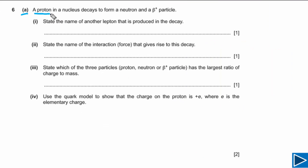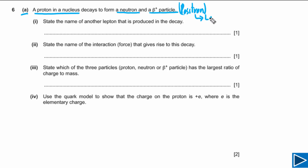For part A, it is given that a proton in a nucleus decays to form a neutron and a beta plus particle. Beta plus particle is in fact a positron, so this is the anti-particle of electron. This positron is a lepton, so it belongs to the lepton family. For part 1, we need to state the name of another lepton that is produced in the decay.